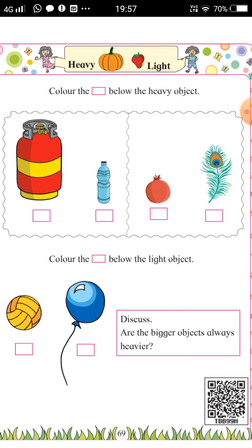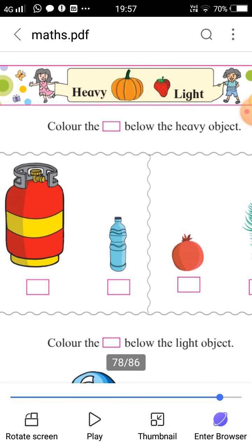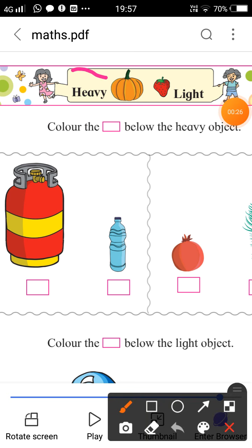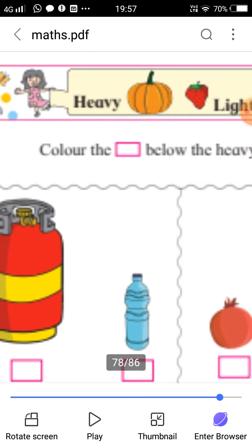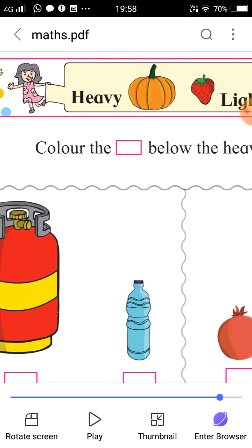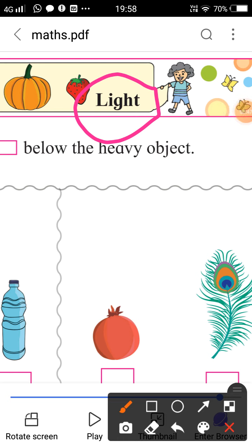And today's topic name is Heavy and Light. What is the spelling of Heavy? Here it is: H-E-A-V-Y. Heavy means Z. L-I-G-H-T. Light means hulka.